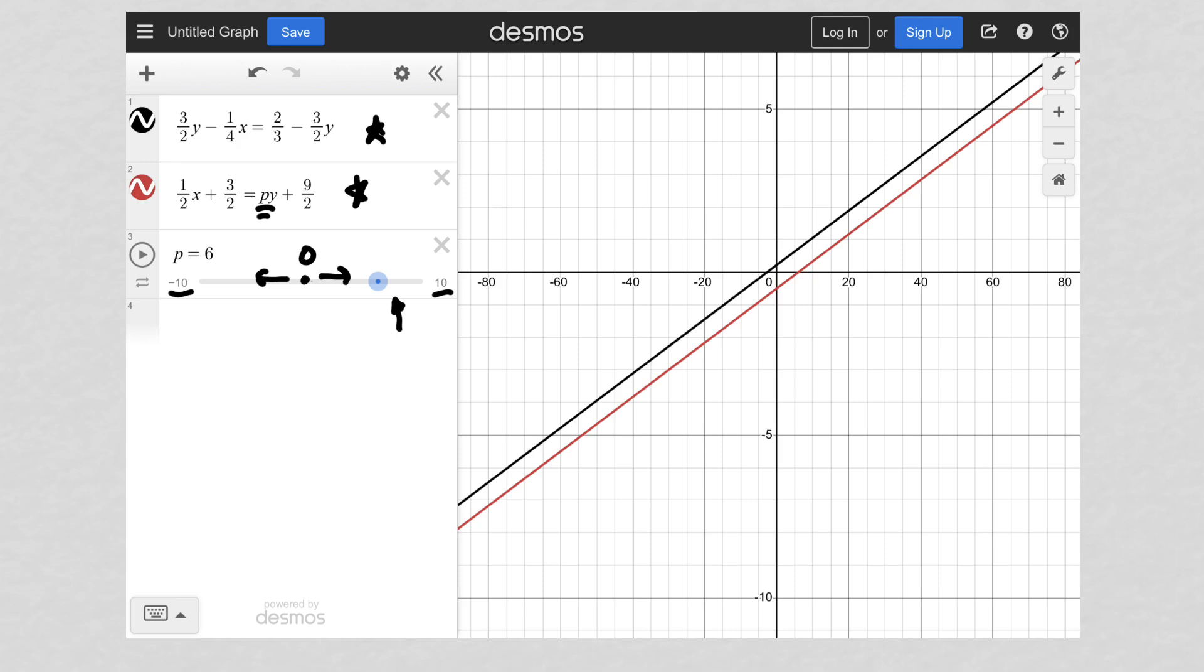So again, we know we want P to equal a value that makes basically these two lines parallel. So while this is a static picture, and you're not seeing me actually slide this blue dot from left to right, what I'm telling you is that it started at zero. I started to slide it to the left, and notice what happened. I began to slide it to the right, and notice that as I slid it to the right, these two lines, the black and red line, were getting closer to being parallel. And then once I hit P equals six, is where I saw that they were exactly parallel.